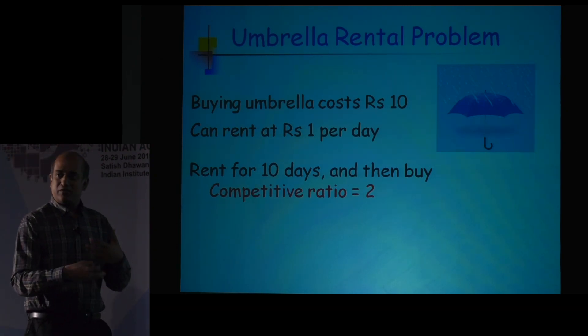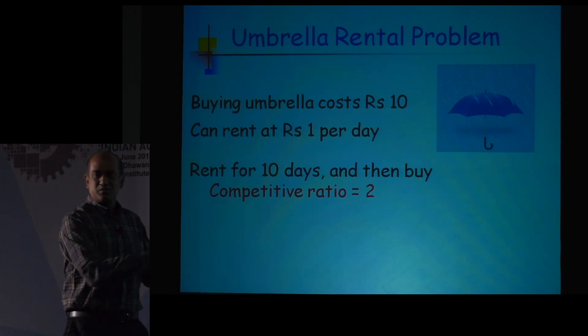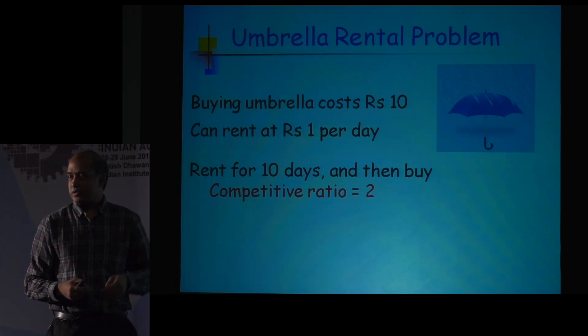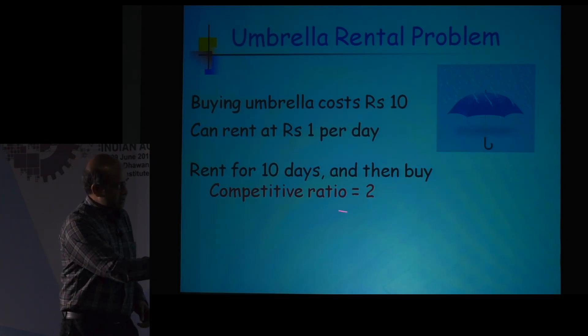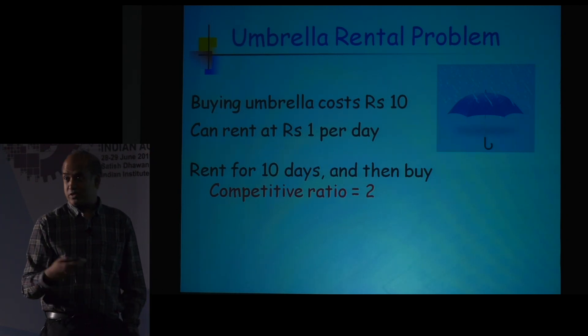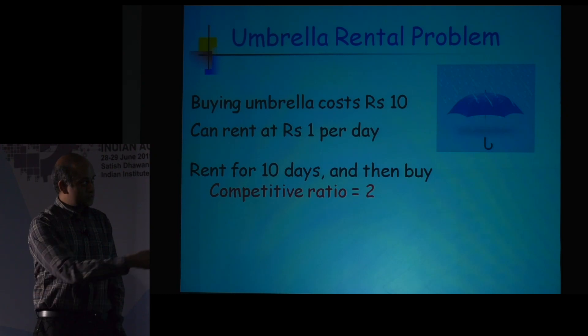You can enrich this model — for example, what if you were allowed to toss coins? It turns out that if you are allowed to toss coins, on average you can do much better than 2. There are more complex models which I will not go into. All I basically said was this notion of competitive ratio, which measures how much worse you are for not knowing the future compared to somebody who knows the entire input.